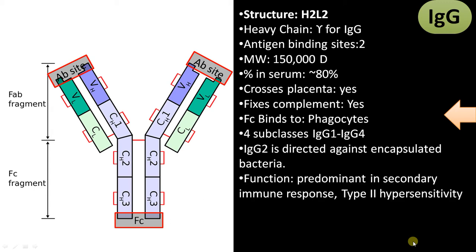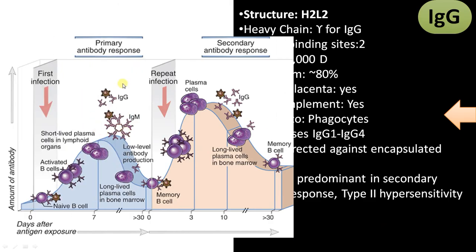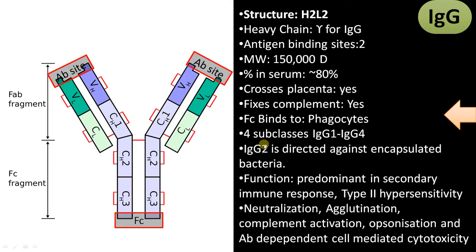Functions include being predominant in secondary immune response. During primary immune response, IgM is the first antibody produced, then IgG concentration gradually increases and becomes the dominant antibody during secondary immune response. Along with IgM, it mediates type 2 hypersensitivity. Other functions include neutralization of toxins, agglutination, complement activation, opsonization, and antibody-dependent cell-mediated cytotoxicity primarily mediated by natural killer cells.